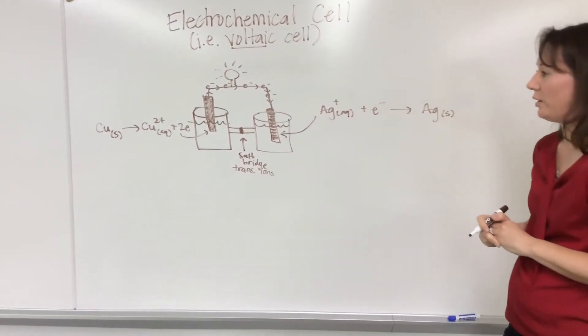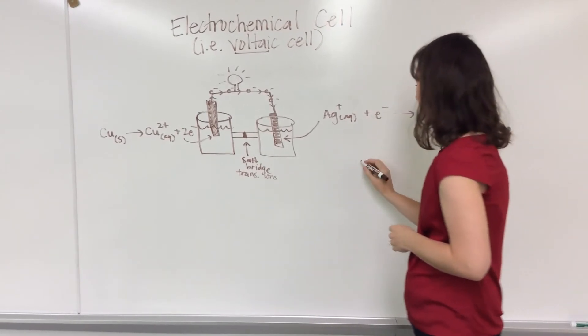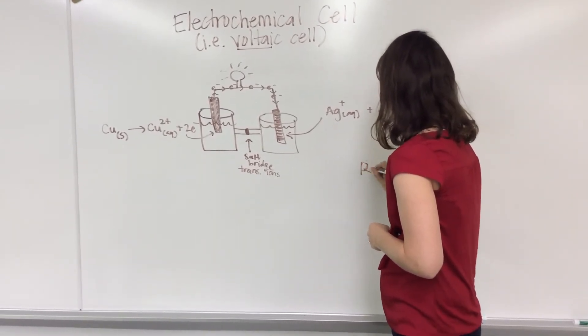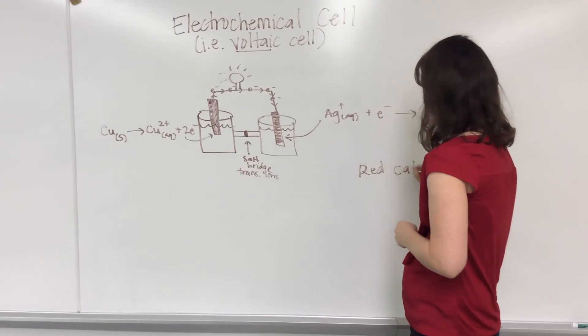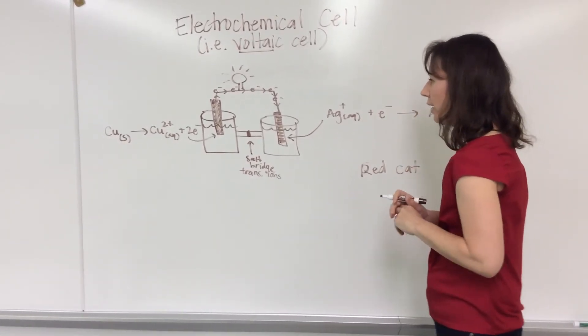Now we would need to identify the cathode and the anode. If you remember the mnemonic 'red cat,' reduction occurs at the cathode.